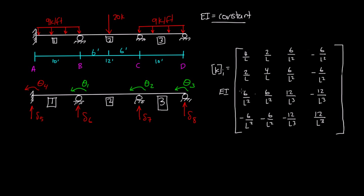Welcome back. For this stiffness matrix, since EI was constant, we pulled it out and I just rewrote the values here without the EI. So in this video, we're going to figure out what the stiffness matrix is for each of the elements 1, 2, and 3. So let's start with element 1.